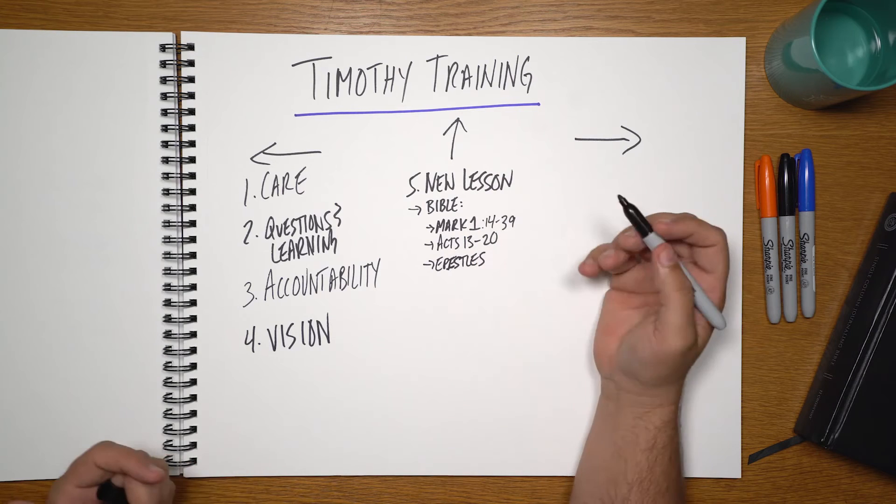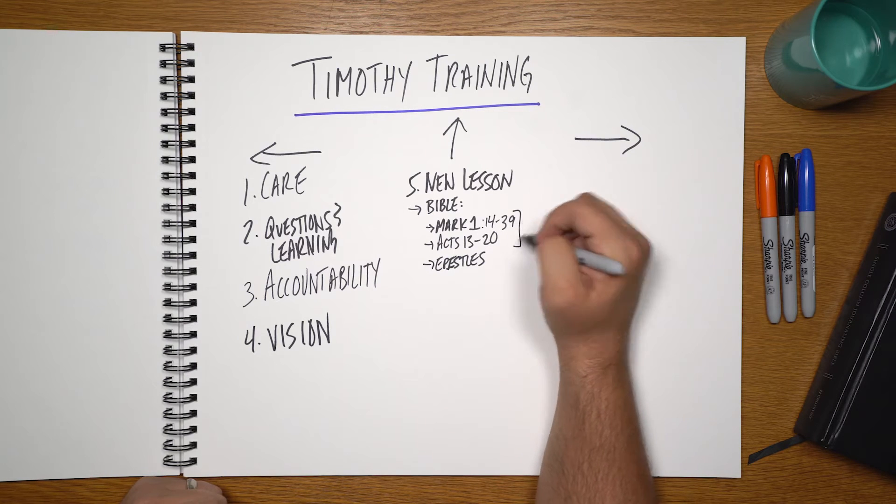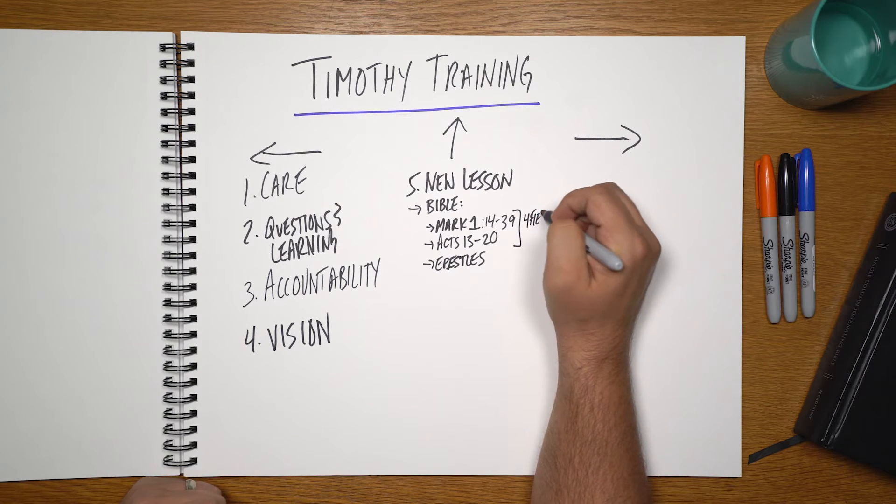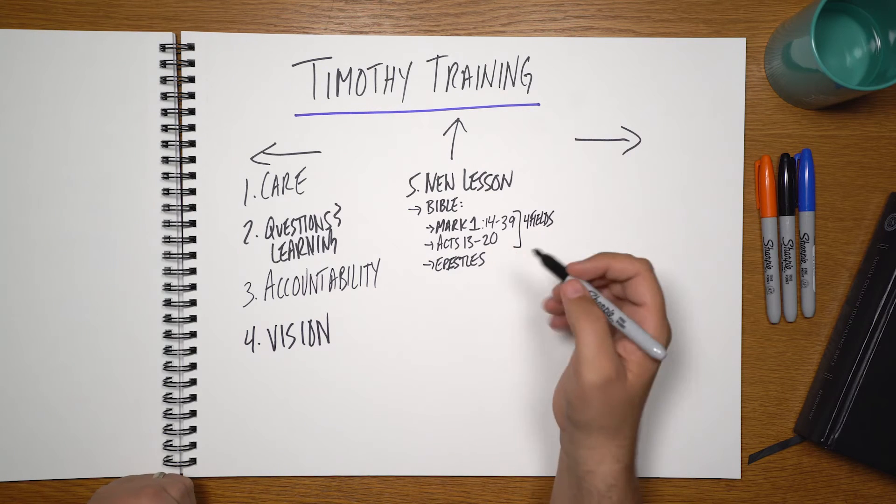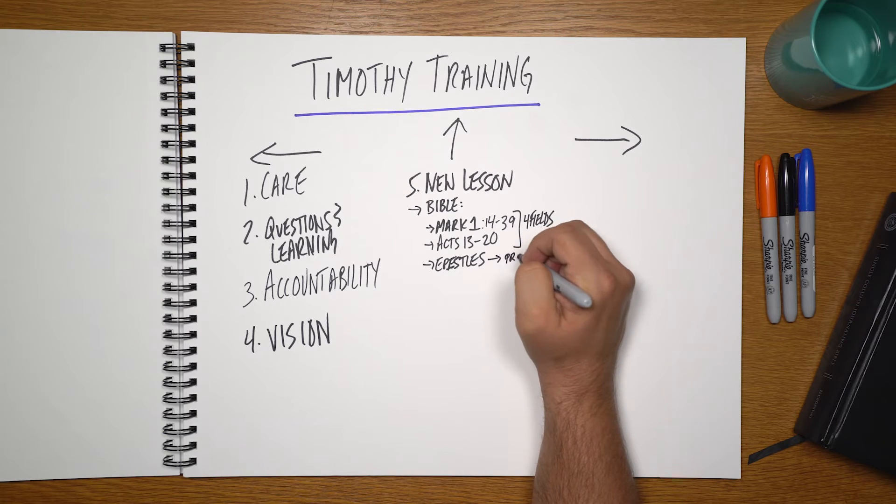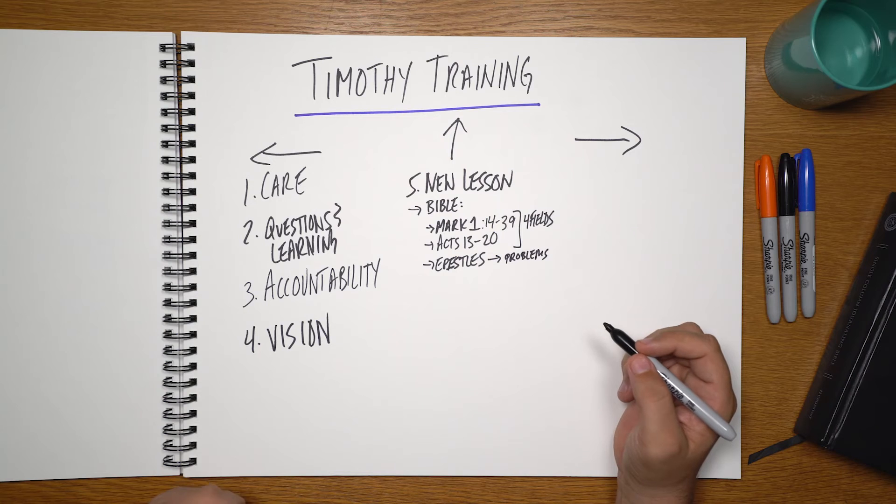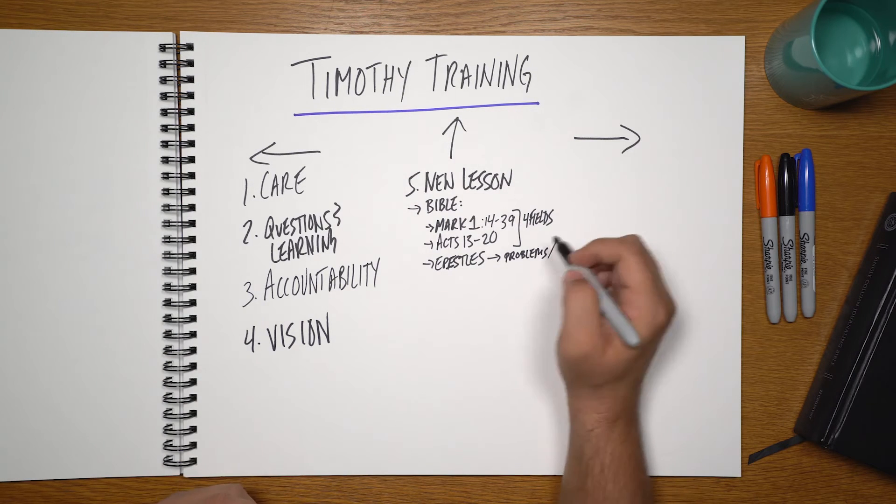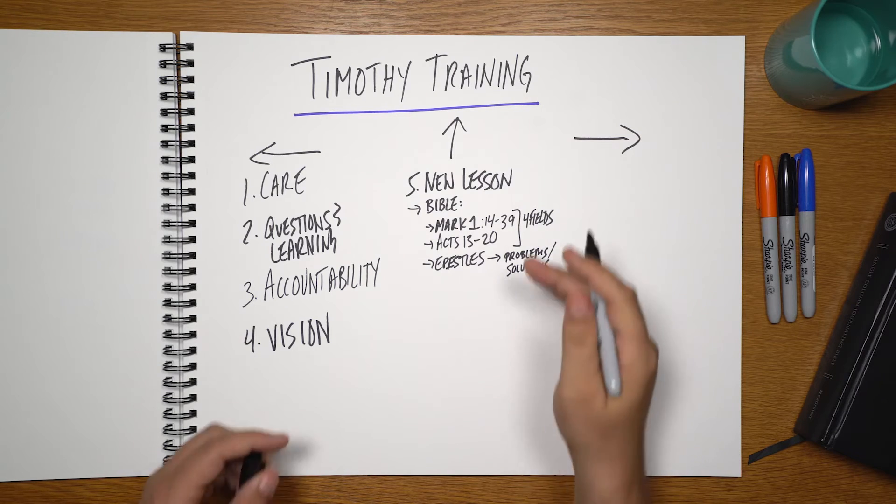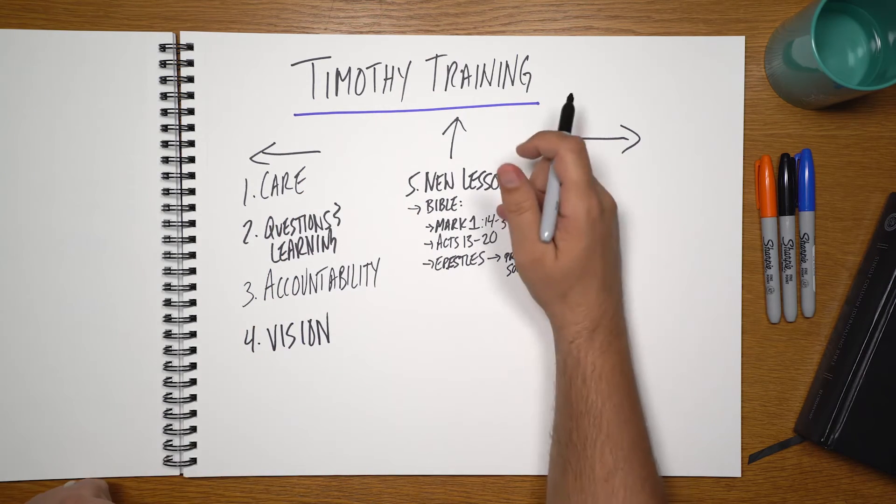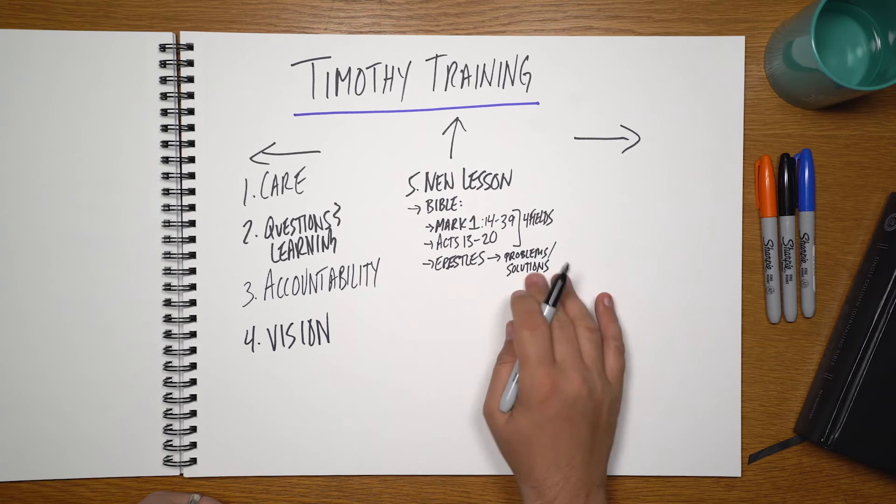To begin to look forward, Mark 1 and Acts 13 and even Luke's gospel, we can see the process, this four fields process, and I'll tell you in a minute the discovery tool we use. But in the epistles, we begin to solve problems and learn from the problems that these church starts encountered in the Bible and what were the solutions that were provided. So this becomes our baseline of starting with Mark 1, going through Acts 13 to 20, even Luke 18 to 20, and then getting into the epistles.